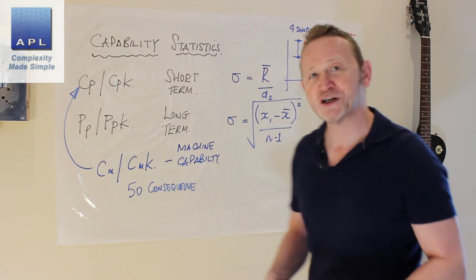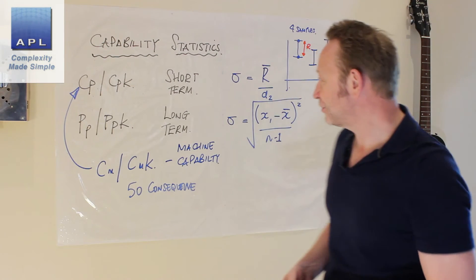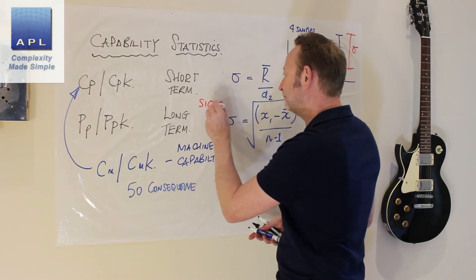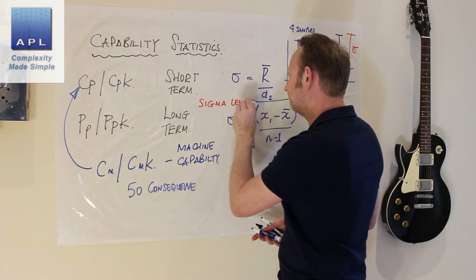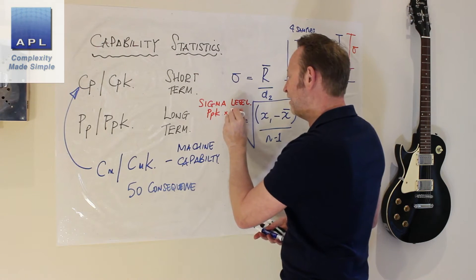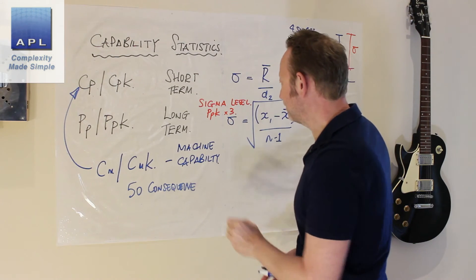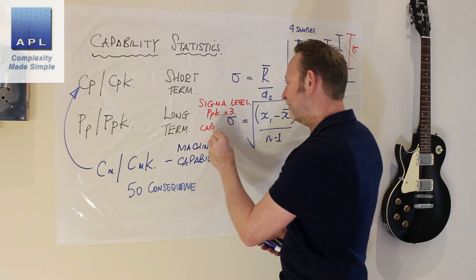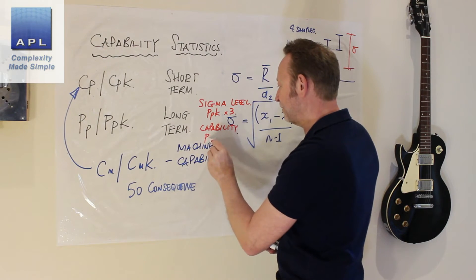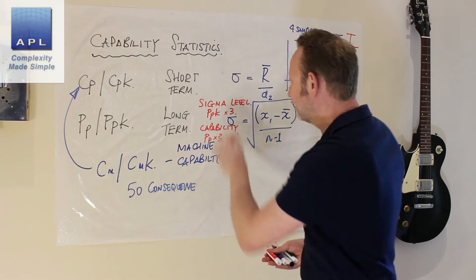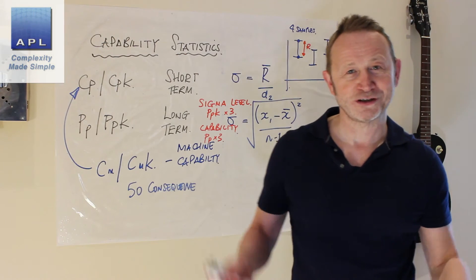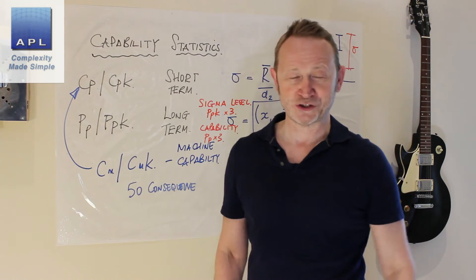And finally, of course, we have sigma level and sigma capability. Sigma level is essentially PPK times 3. Sigma capability is PP times 3. So it's just another version of those statistics. That is my attempt to explain all the process capability measures.